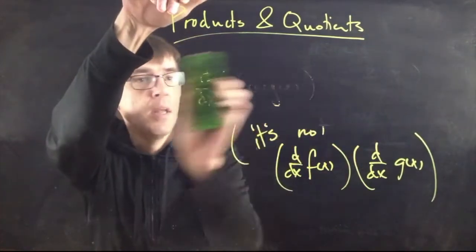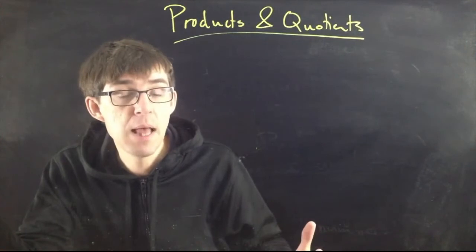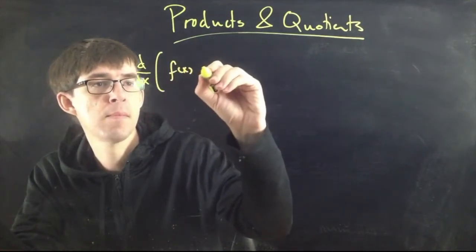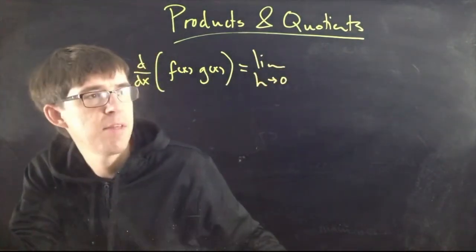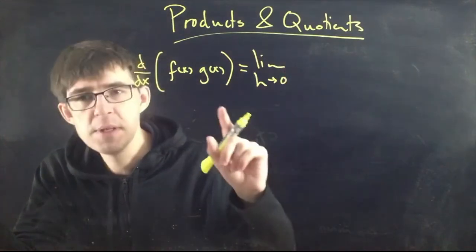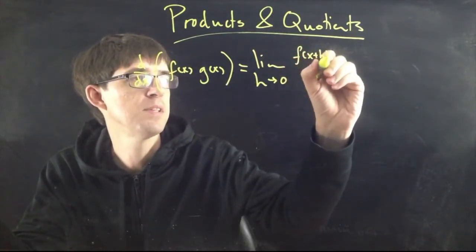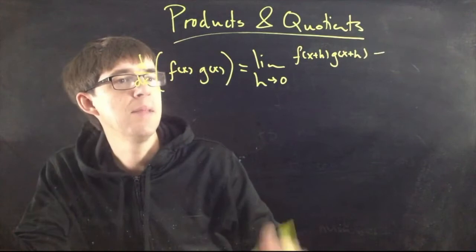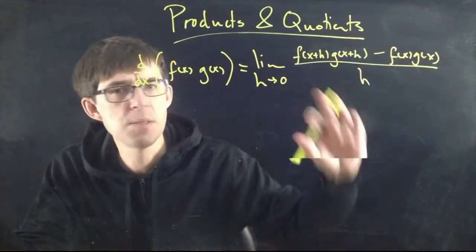Anyway, there is a rule for finding the derivative of a product. Since we don't know the rule yet, all we have to rely on is the definition of the derivative. Let's just try it out. This is going to get a little nasty, but I think we can handle it. We begin with the limit. Remember the definition of the derivative: f of x plus h first, but this time the function we're taking the derivative of is f(x) times g(x).